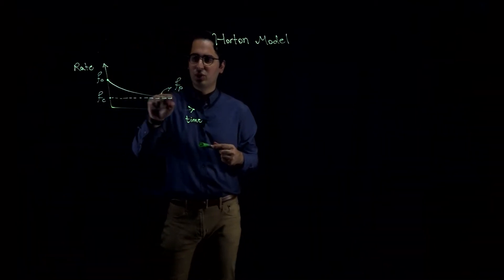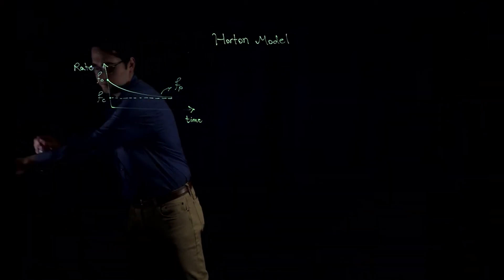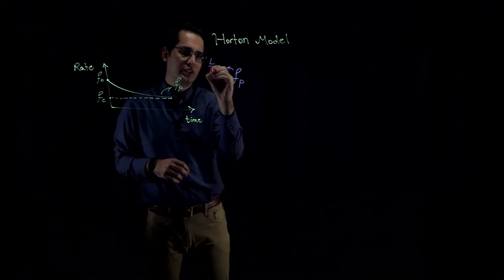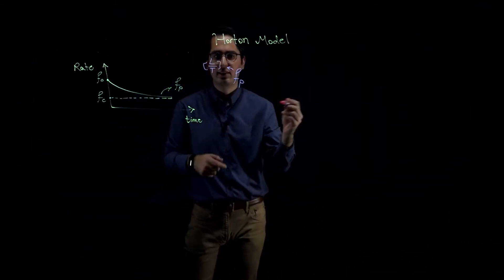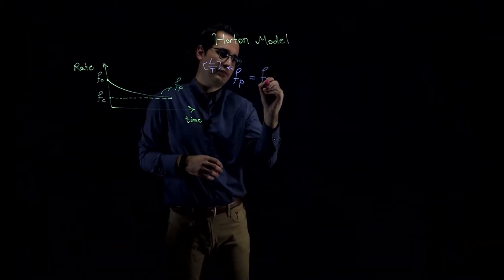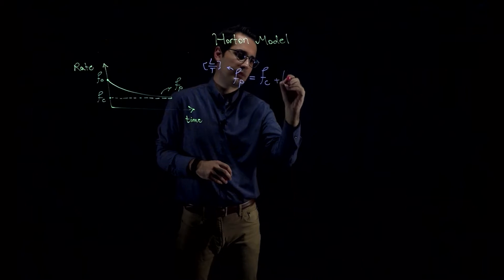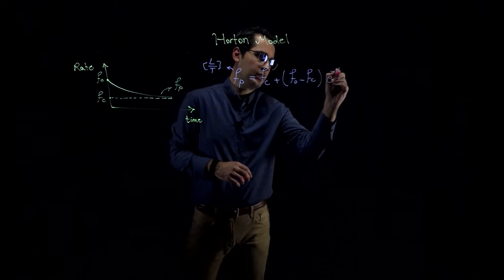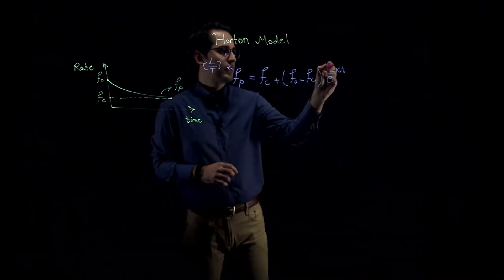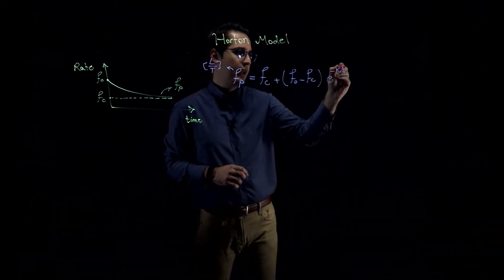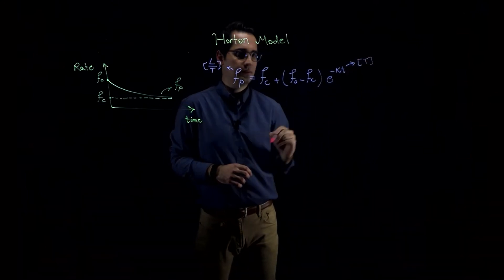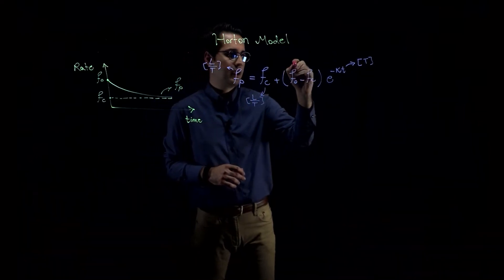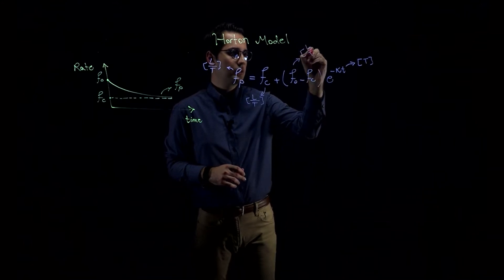If I write the equation for this curve, it will look like this. Potential infiltration F sub p, which has a dimension of length over time — in other words, this represents a rate — is equal to F sub c (minimum infiltration) plus F sub zero (initial infiltration) minus F sub c, times e to the power negative kt. Here, k is an exponential decay factor and t is time, so k has dimension of inverse time. The dimensions for F sub c and F sub zero are also length over time.